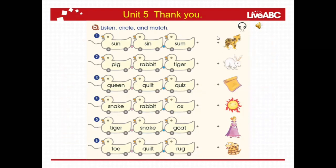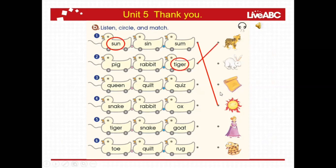Okay. With the color red, con el color red. Number one, listen: sun. Sun. Circle the sun. Okay. Sun. Number two, listen: tiger. Circle the tiger. Tiger. Number one, repeat: sun. Sun. What does it mean? Sun.